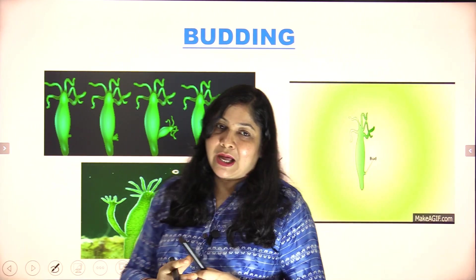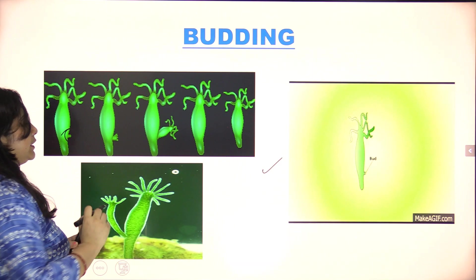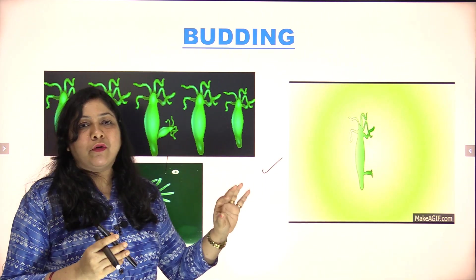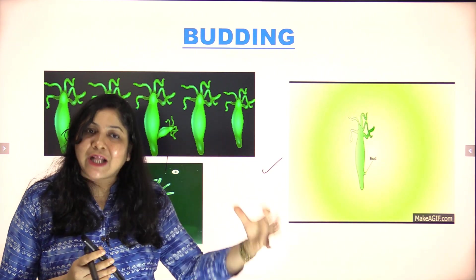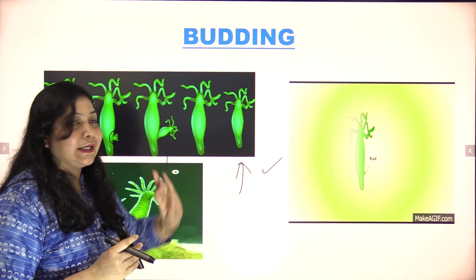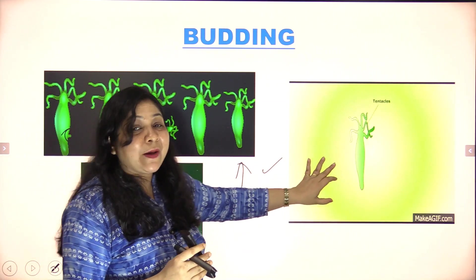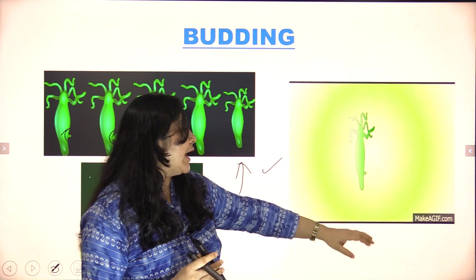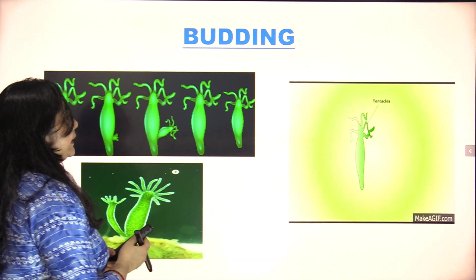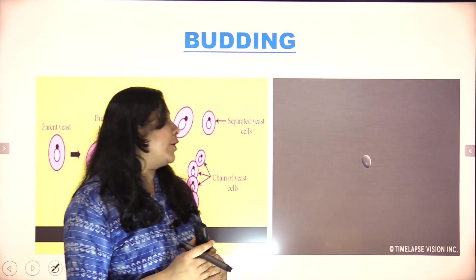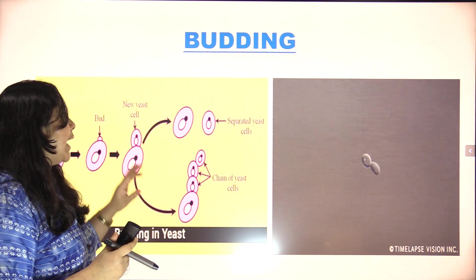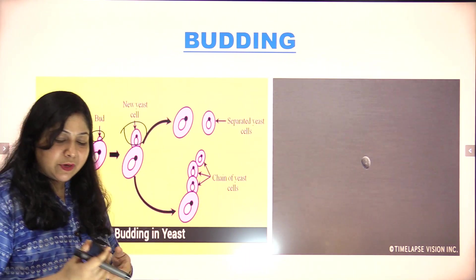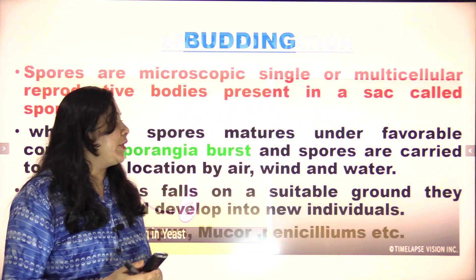You can see the hydra diagram here — the bud arises first, slowly develops, then tentacles form. Once tentacles form, it is ready to detach from the parent body and exist as a new individual. Yeast also does the same process of budding — a bud forms, and when mature, it detaches from the parent body, producing more offspring.